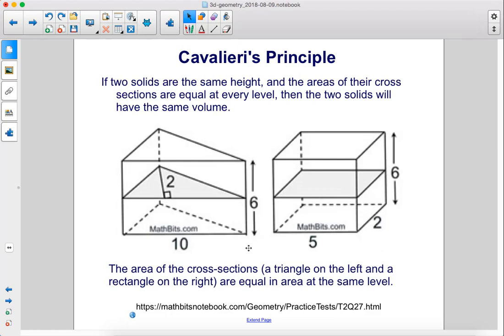The area of the cross sections, a triangle on the left and a rectangle on the right, are equal in area at the same level.